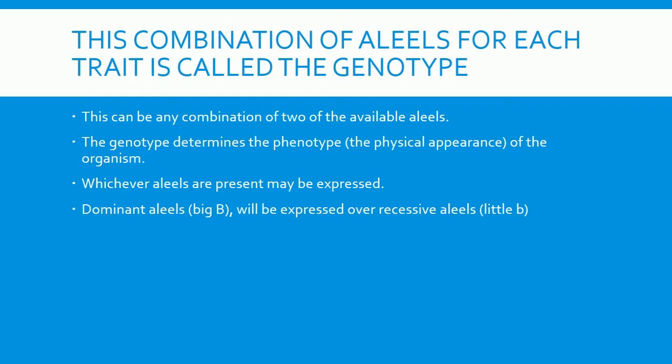Whichever alleles are present may be expressed. Dominant alleles, represented as big B, will be expressed over recessive alleles, represented as little b.